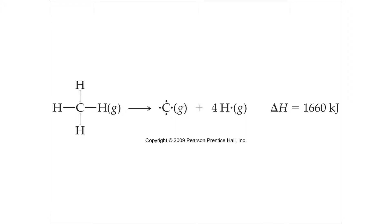If I have a methane molecule and I break it all up, there are four carbon-hydrogen bonds. So if I can get the energy it takes to break them into carbon and hydrogen — which is the heat of formation of this molecule — and it requires 660 joules of energy to do it, then each bond must be one-fourth of that. So I can figure out how much energy it takes to break a bond.